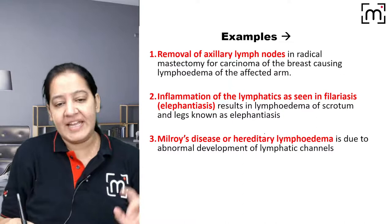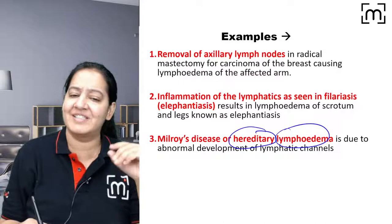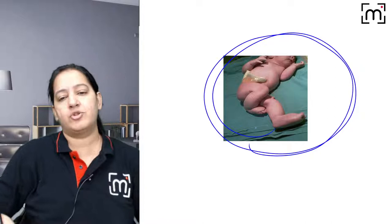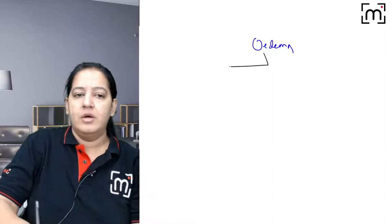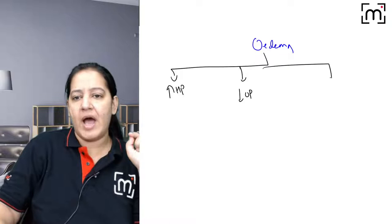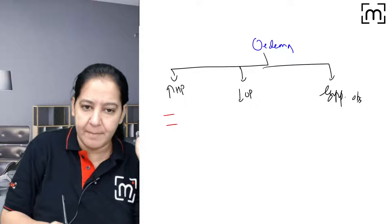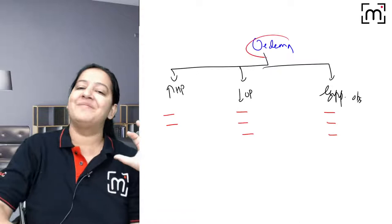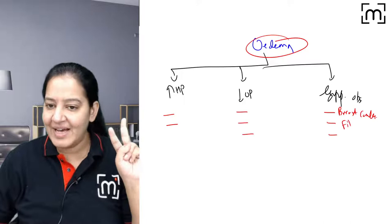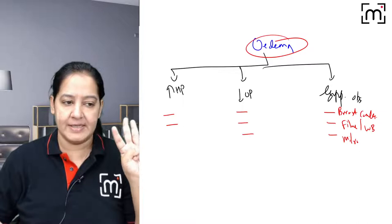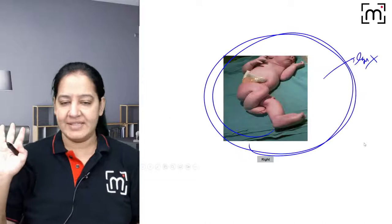The third example is Milroy disease — a hereditary/congenital condition where the lymphatics are not functional from birth. God has not given functional lymphatics. So the child will have edema throughout the body from birth. So the three causes of lymphedema are: number one, breast cancer (axillary lymph node removal); number two, filariasis/elephantiasis (Wuchereria bancrofti); number three, Milroy disease (congenital).